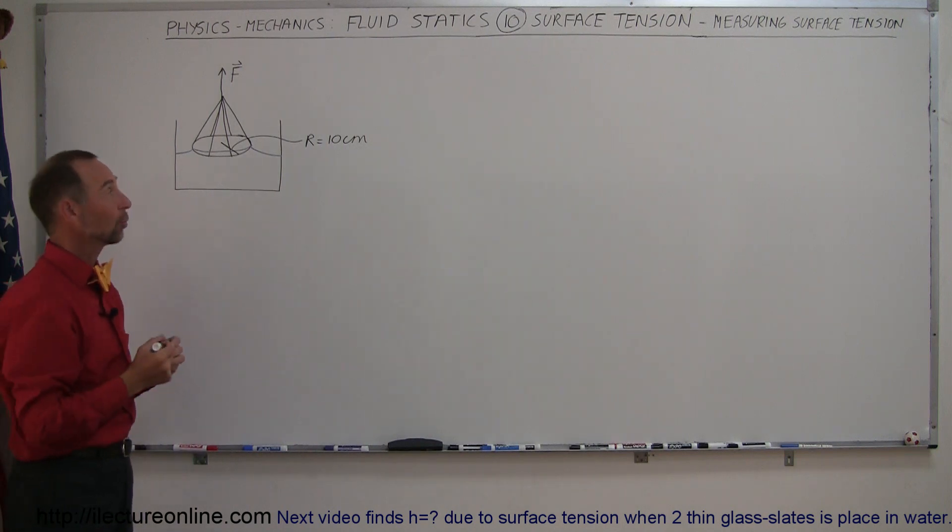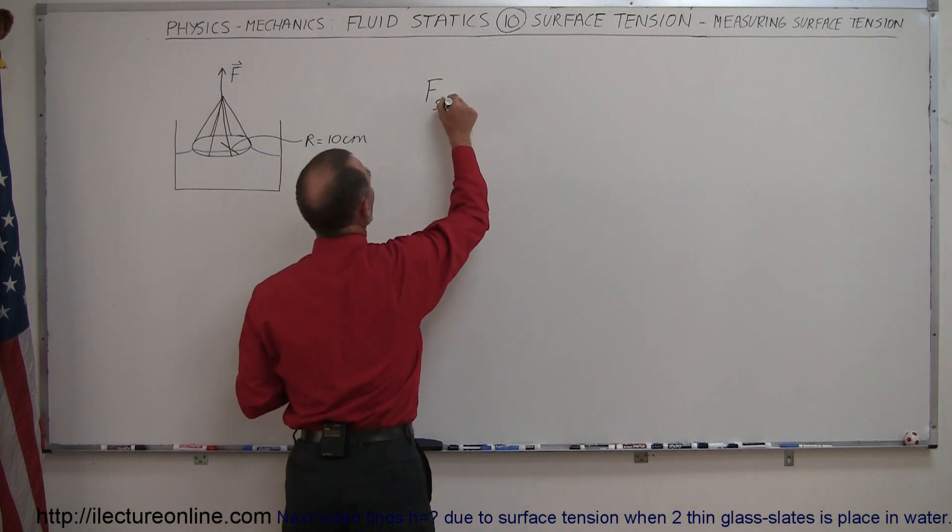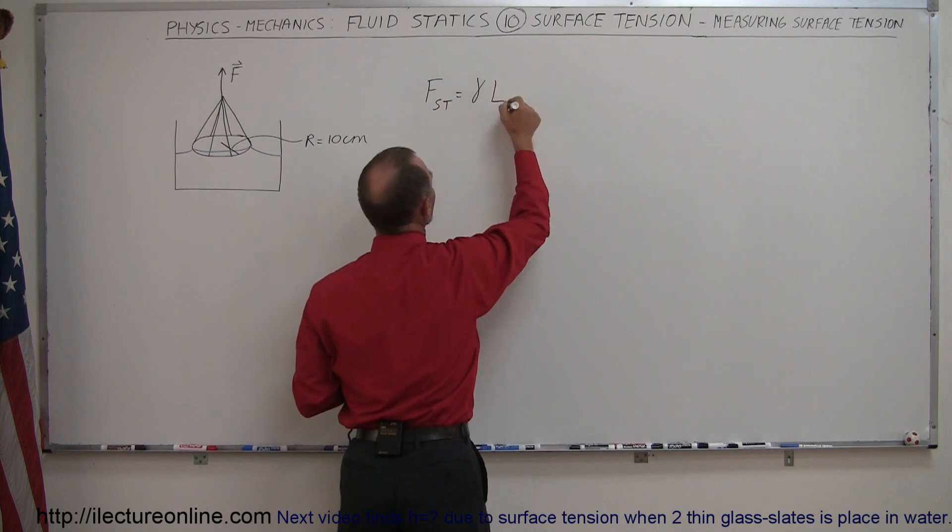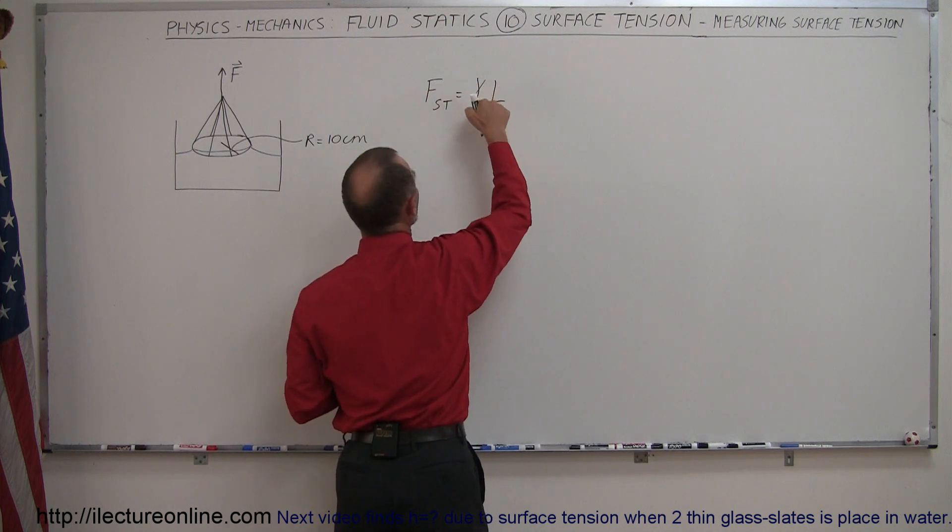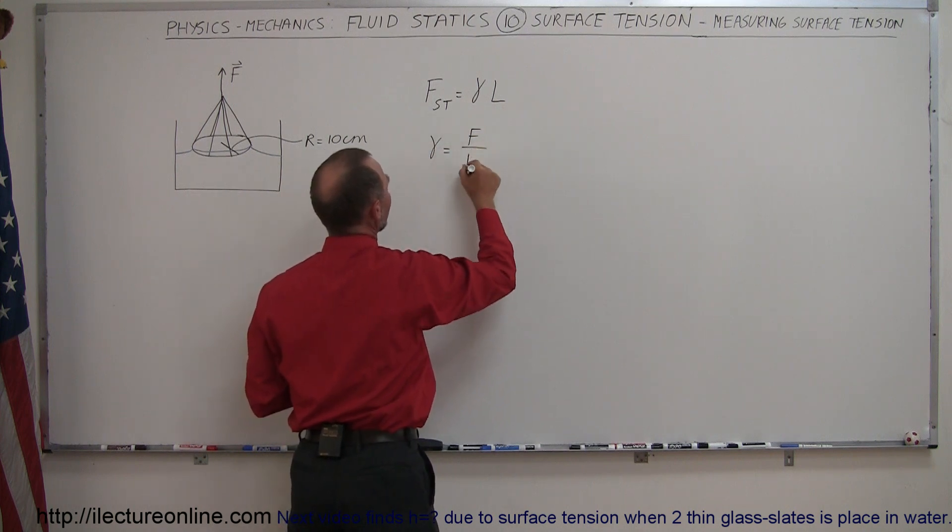So let's see how the equation works out. Again, the force caused by surface tension is equal to the coefficient of surface tension times the length. Since we're looking for the coefficient, we say that the coefficient is equal to the force divided by the length.